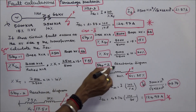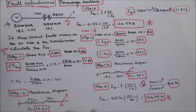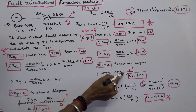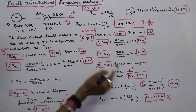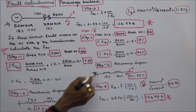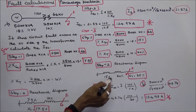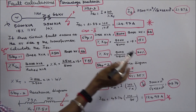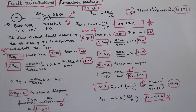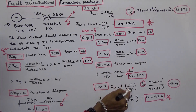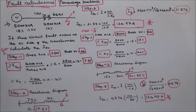Step 2: draw the reactance diagram. Generator reactance is 15% and transformer reactance is 20%. Total reactance from the fault point to the neutral point is 15 plus 20, which equals 35%. Step 3: calculate the short circuit current, which equals the full load current multiplied by 100 divided by the total percentage reactance.